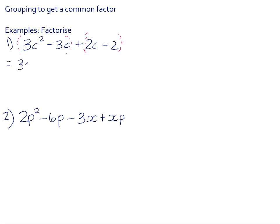You can take out the 3C as a common factor here between the 3C squared and the negative 3C. That gives you C minus 1. And over here, there is a common factor of 2, which also gives you C minus 1.